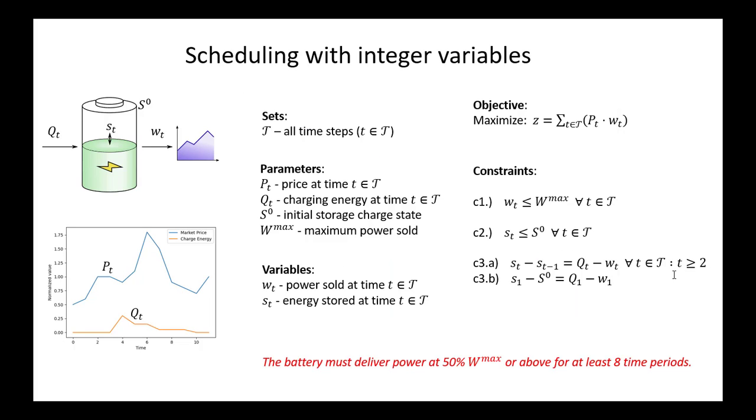So let's now consider a situation where the battery, for some reason, must deliver power at 50% of the maximum value or above for at least eight time periods. Previously, our optimal solution had noted that we'd only need six time periods to achieve maximal revenue.